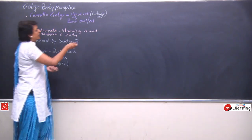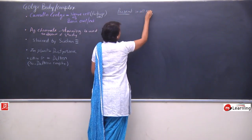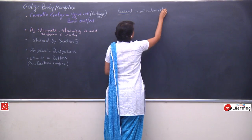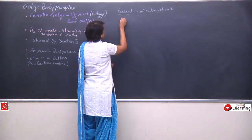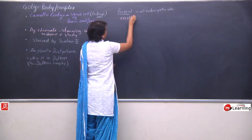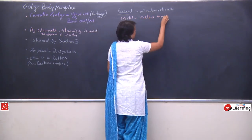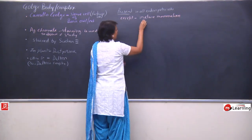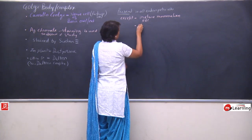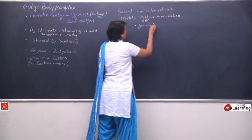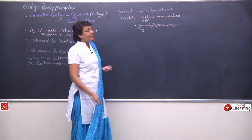Golgi body is present in all eukaryotic cells. Again, there are exceptions — certain eukaryotic cells do not have Golgi, except mature mammalian RBC. It is also absent in gametes or spermatozoa of bryophytes and pteridophytes.